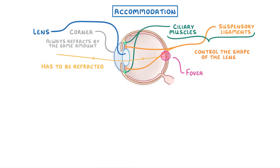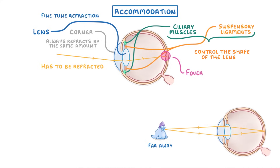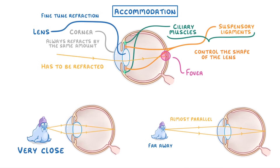Meanwhile, the role of the lens is to fine-tune the refraction so that the light rays always converge exactly on the fovea, regardless of whether the object is really far away — in which case the light rays will be almost parallel by the time they hit the eye — or very close, in which case the rays will hit the eye at a wide angle.